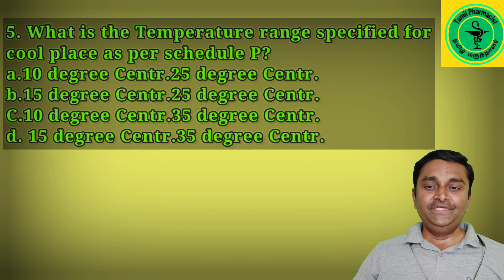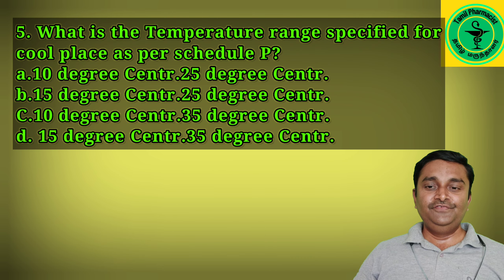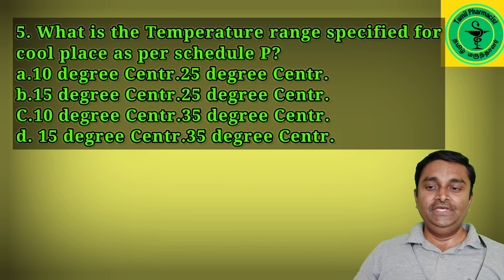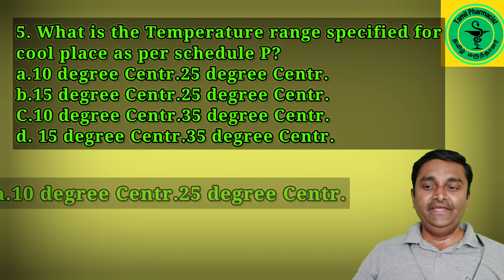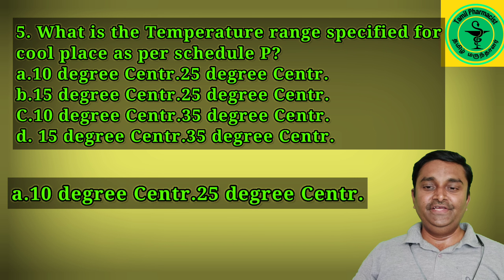Fifth question: what is the temperature range specified for a cool place as per Schedule P? The answer is 10°C to 25°C.